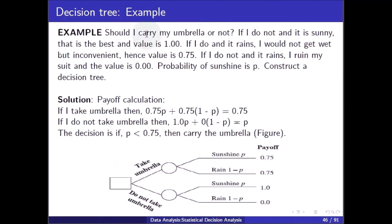Consider the umbrella example: Should I carry my umbrella or not? If I do not carry it and it is sunny, that is the best outcome — value is 1. If I do carry it and it rains, I would not get wet but it is inconvenient — value is 0.75. If I do not carry it and it rains, I ruin my suit — value is 0. Let the probability of sunshine be p. Now construct the decision tree.